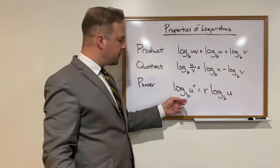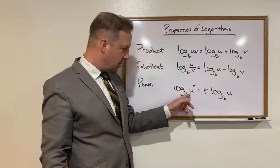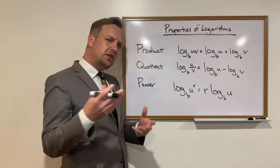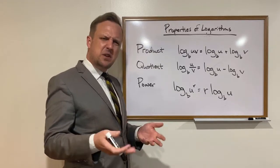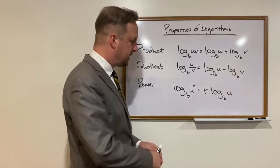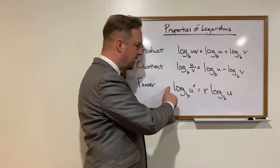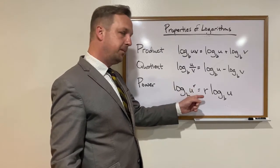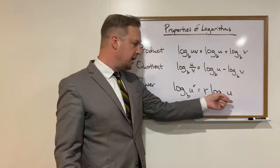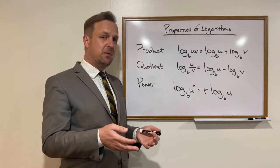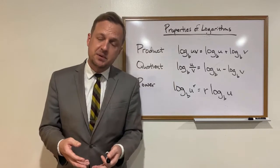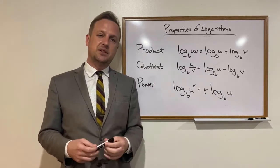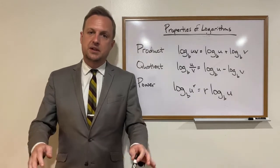Lastly, the power rule. So log base b of u raised to the r power. Notice that we're actually raising this to a power here. But remember, this log is also the inverse of an exponential function. So in a sense, we've got an exponent on top of an exponent. We can take this exponent and move it to the front and just multiply it by the log. So log base b of u raised to the r power is the same thing as that exponent, r, just multiplied by the log base b of u with no exponent whatsoever.